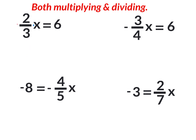So multiply by the reciprocal of two-thirds, which is three-halves, on both sides. When you multiply a fraction by its reciprocal, the threes cancel and the twos cancel, leaving just x. On the right side: six times three is eighteen, divided by two on the bottom, so eighteen divided by two is nine. X equals nine. That's the one-step method using the reciprocal.